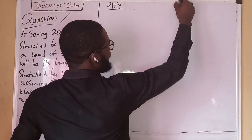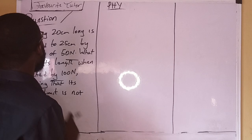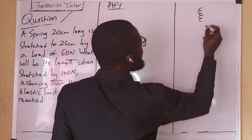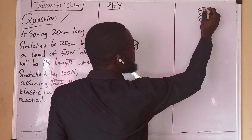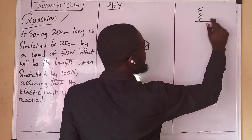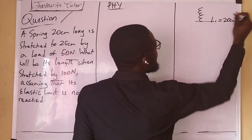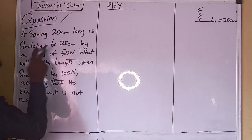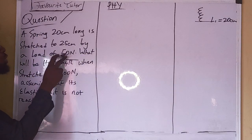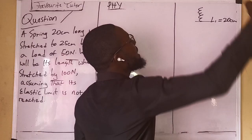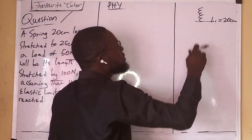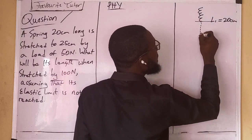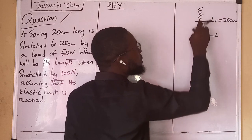We're told that a spring is 20 centimeters long. If this is the spring, from here to this place, the original length of the spring equals 20 centimeters. Then we place a load — it is stretched to 25 centimeters by a load of 50 newtons. So we place a 50 newton load on this spring and it stretches to a new length.